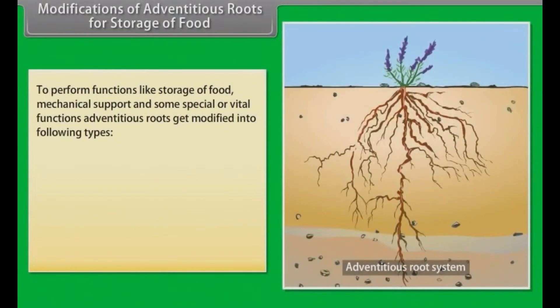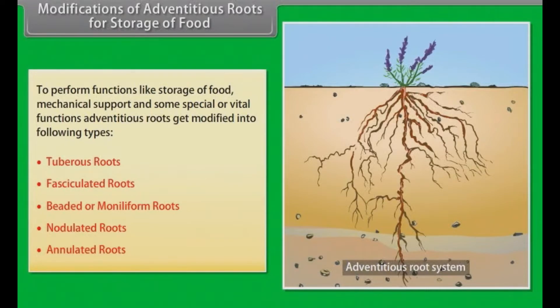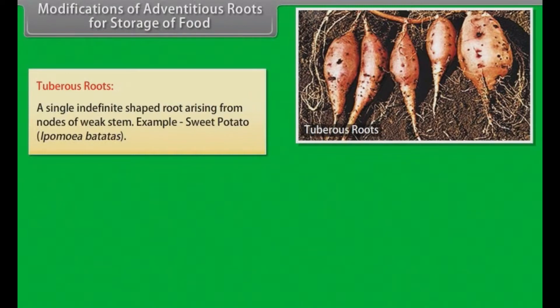Modifications of adventitious roots for storage of food: To perform functions like storage of food, mechanical support and some special or vital functions, adventitious roots get modified into the following types: tuberous roots, fasciculated roots, beaded or moniliform roots, nodulated roots, annulated roots. Tuberous roots: A single indefinite shaped root arising from nodes of a weak stem.